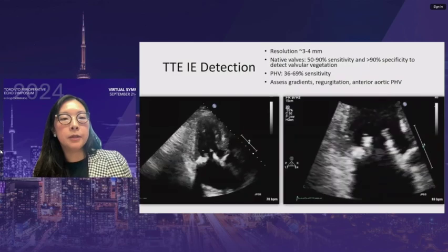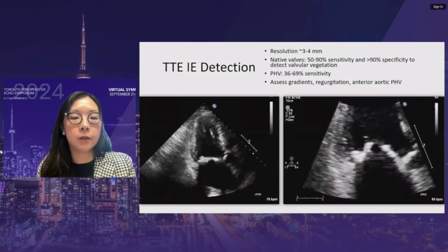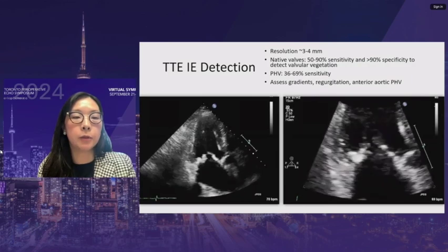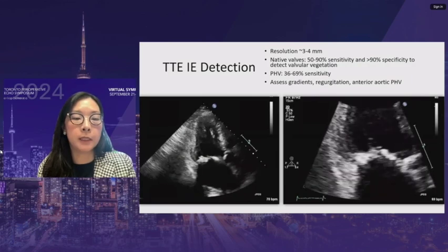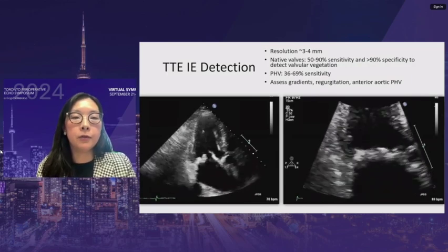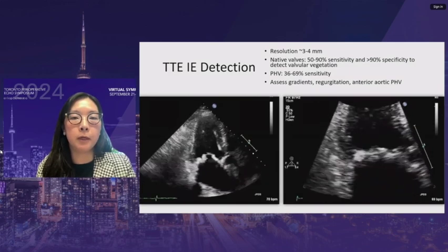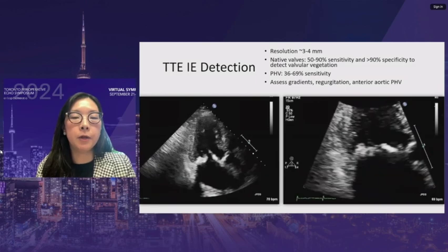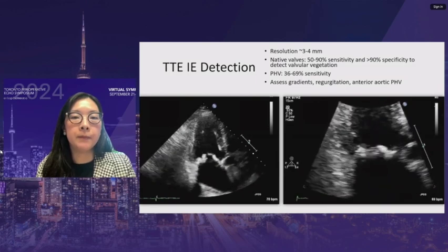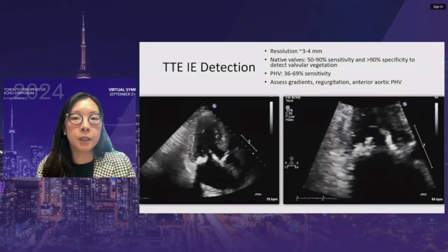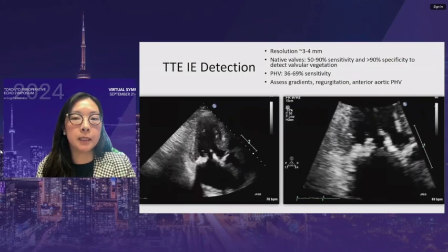Transthoracic echocardiography remains the first line of imaging for all patients with possible or suspected infective endocarditis. The image resolution on TTE is about three to four millimeters. For native valves, the sensitivity for detecting a valvular vegetation is about 50 to 90% in studies.